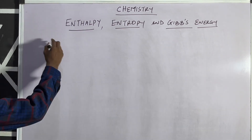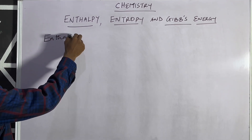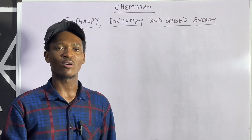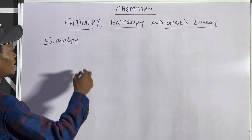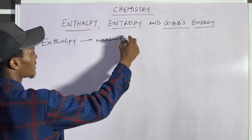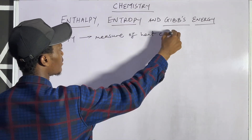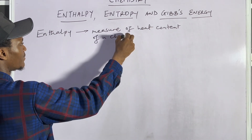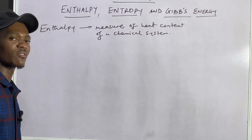Let's start by looking at entropy. What is entropy? Entropy simply is the measure of the heat content of a chemical system. The measure of heat content of a chemical system is called entropy.